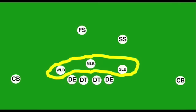Linebackers stand two to four yards behind the defensive line. They are identified as strong, middle, and weak linebackers, shown here as SLB for strong linebacker, MLB for middle linebacker, and WLB for the weak linebacker.